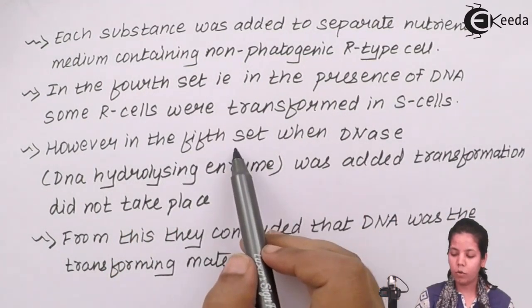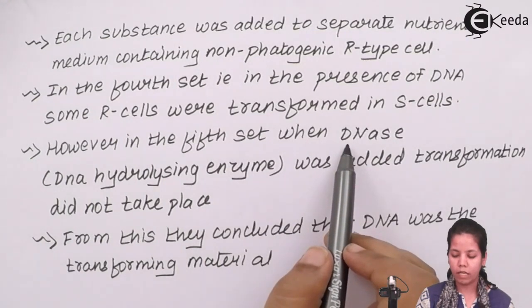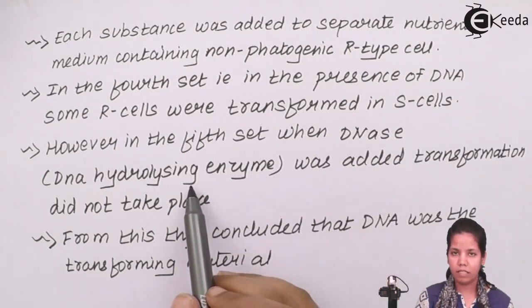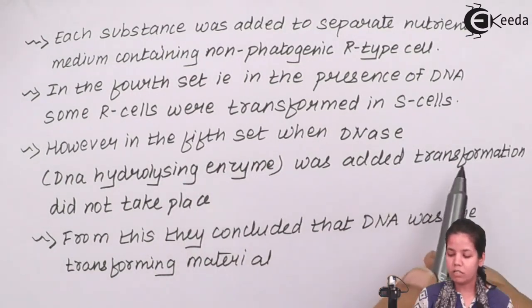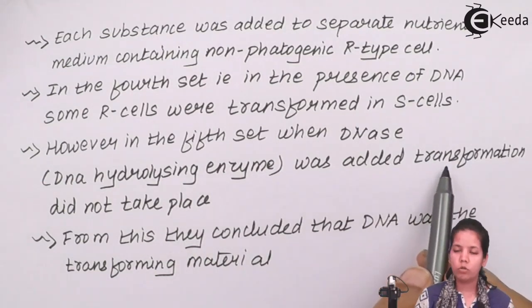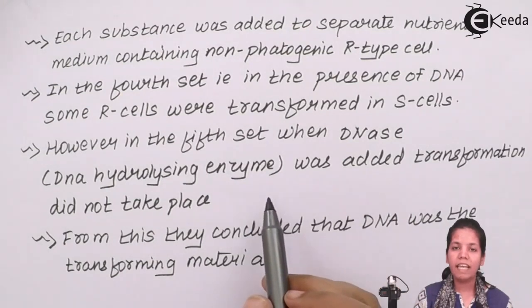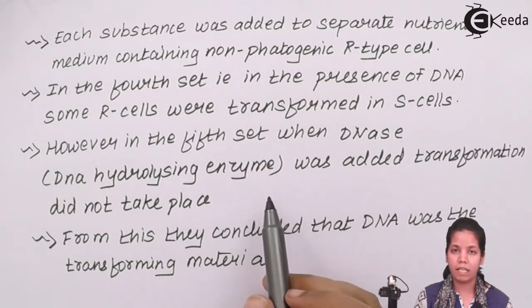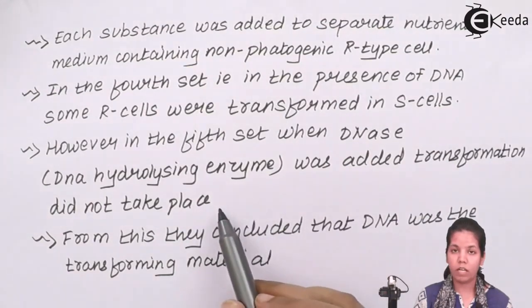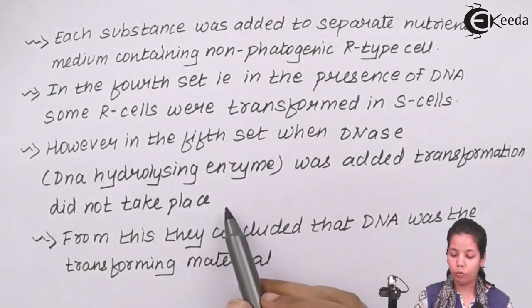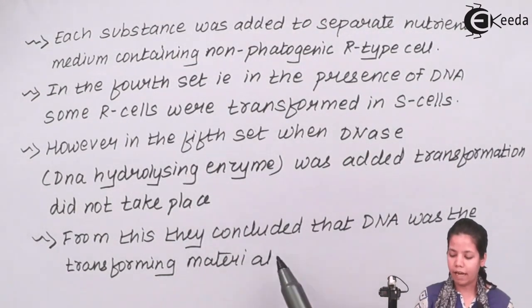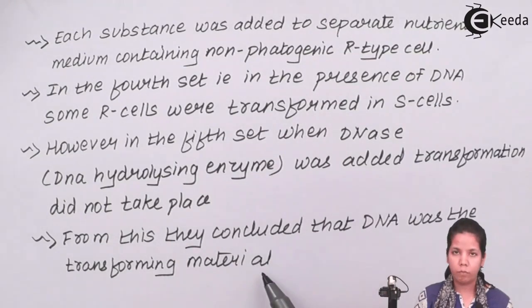However, in the fifth set, when DNA-ase — the DNA-hydrolyzing enzyme that breaks down DNA — was added, transformation did not take place. So what we can say is that in every other test tube, when a particular substance such as carbohydrates, proteins, or enzymes was present, transformation could be seen. Whereas in the test tube with DNA-ase, transformation did not take place. From this they concluded that DNA was the transforming material.